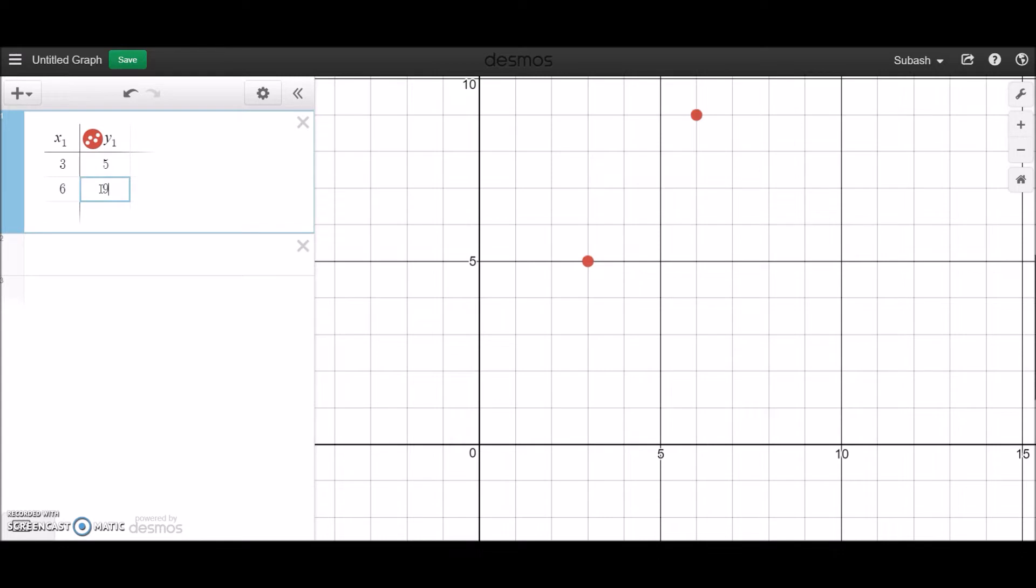So what I'd like is an equation of a straight line that's actually going to go through these two red points. Now normally what you do is you'd actually work out the gradient, then put it in the equation of a line, and then work out what the actual equation of the line is.